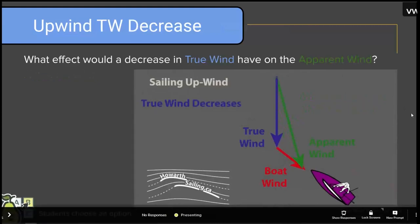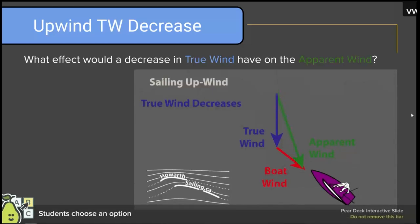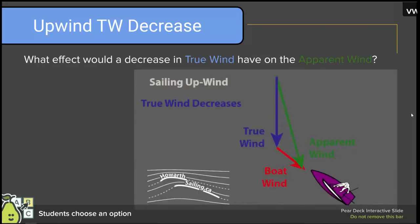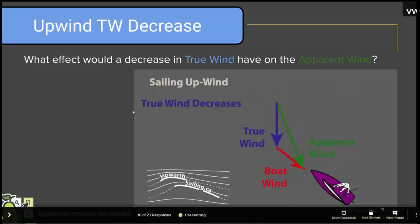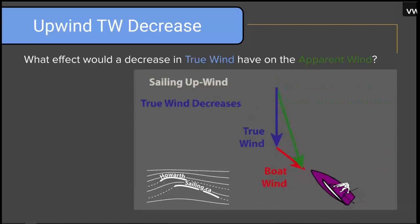A decrease in true wind has the opposite effect. As the blue true wind arrow shrinks, the green apparent wind arrow also shrinks and rotates. A decrease in true wind causes the apparent wind to decrease and shift forward — which is a knock.